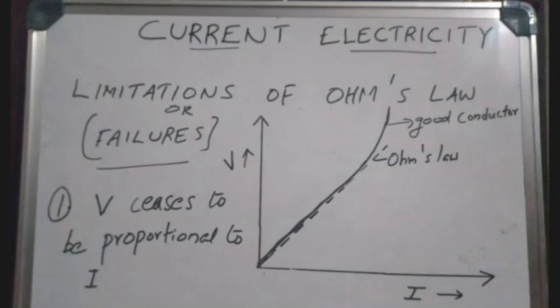The condition is at constant temperature. We say V is proportional to I. At constant temperature, V is proportional to I — this is the valid condition for Ohm's Law.